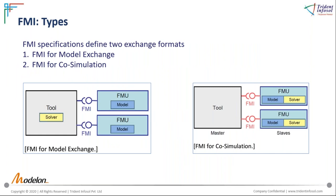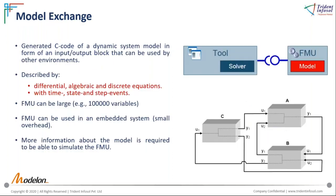To further understand the composition of an FMU, we first look at the types of FMI. There are two types: Model Exchange and Co-simulation. The difference is that Model Exchange contains only the details of the model, whereas Co-simulation contains details of both the model and the solver.